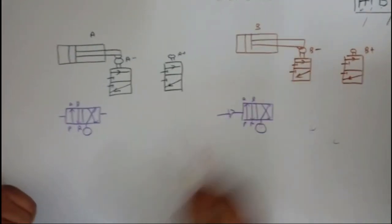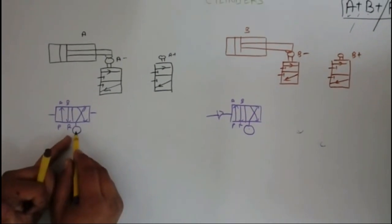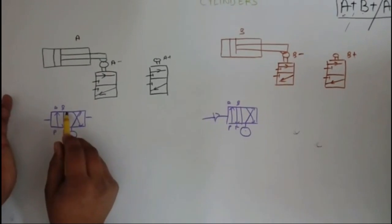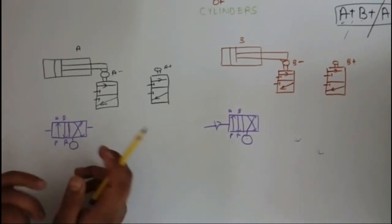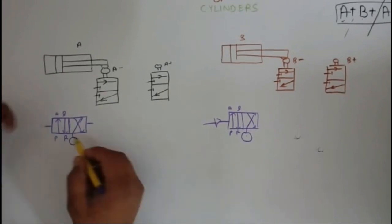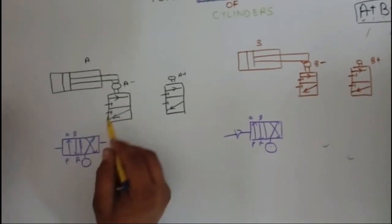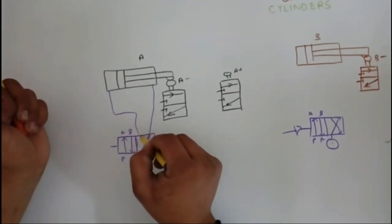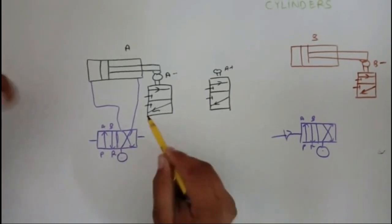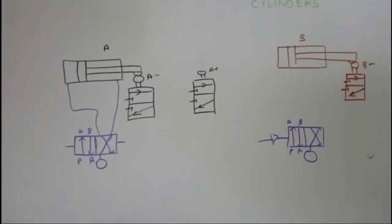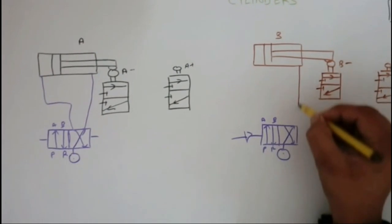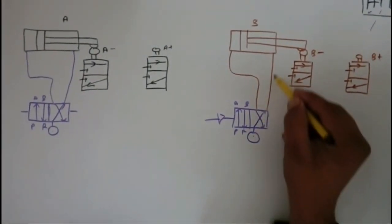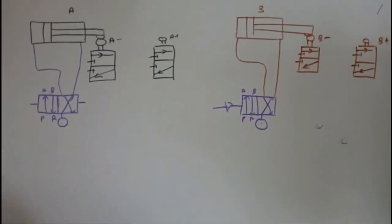Initially, pressure is provided at a specific position. The two blocks represent positions of the valve. When in the forward position, cylinder A is kept in the retracted position — that is, A negative. The same applies for cylinder B, with pressure going through and keeping both cylinders retracted.